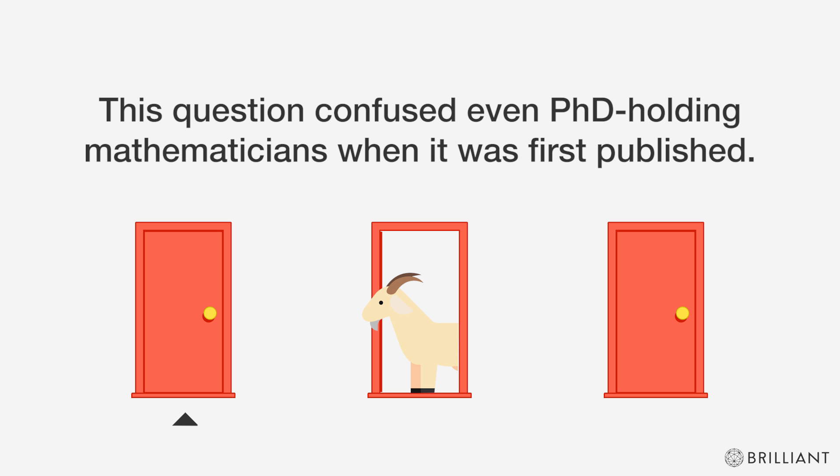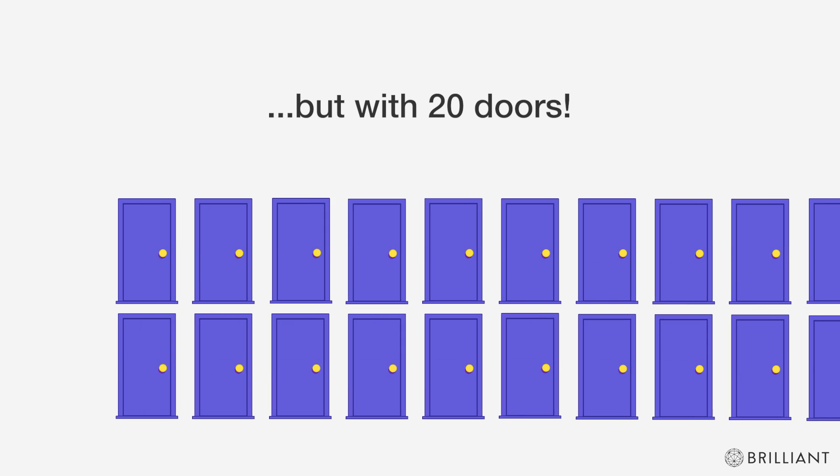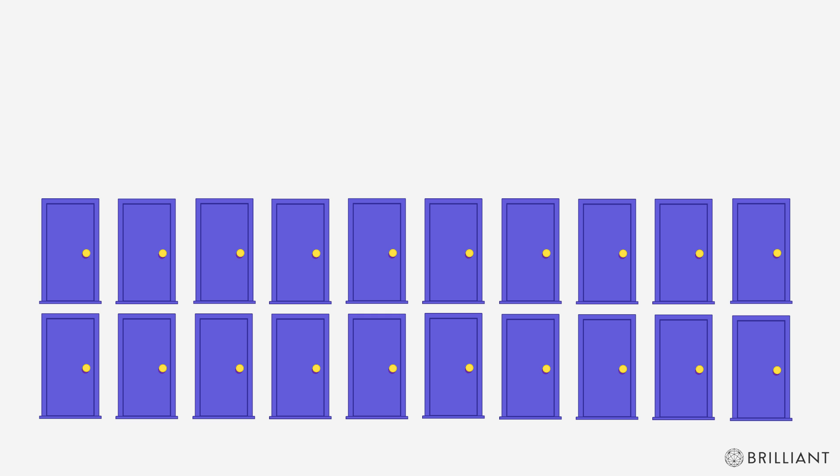This question confused even PhD-holding mathematicians when it was first published. So maybe you'd have better luck on the less popular Mandy Hill show, which features a similar problem but with 20 doors. There's still just one car. Again, let's say you pick the first door.